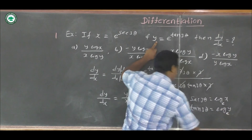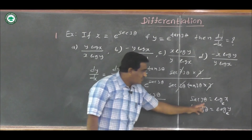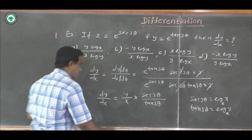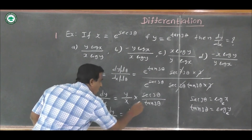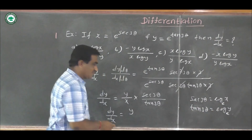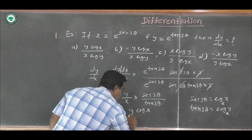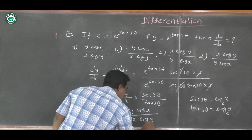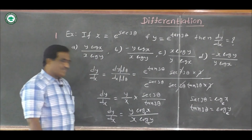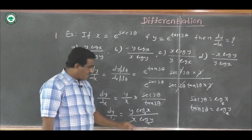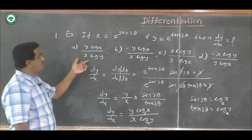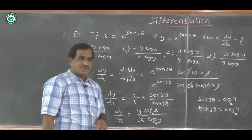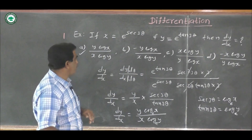From equation 2, by the definition of logarithm: tan 3 theta equals log y to the base e. Substituting these values: dy by dx equals y into sec 3 theta upon x into tan 3 theta, which equals y into log x upon x into log y. This is the correct answer, matching option A. Therefore dy by dx equals (y log x) upon (x log y).